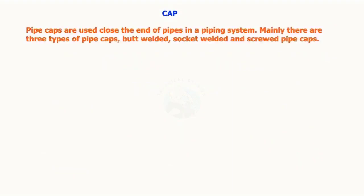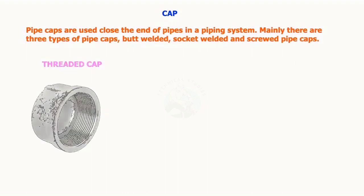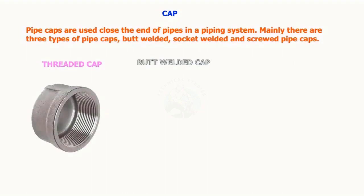Pipe caps are used to close the end of pipes in a piping system. Mainly there are three types of pipe caps: butt welded, socket welded, and screwed pipe caps.